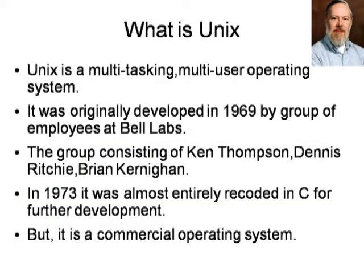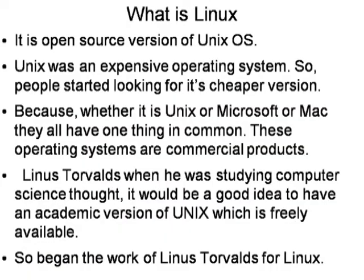Basically, Unix is a multi-tasking, multi-user operating system. As I told you, it was originally developed in 1969 by a group of employees at Bell Labs — Ken Thompson, Dennis Ritchie, Brian Kernigham — and it was recoded in C. But the limitation of Unix is that it is a commercial operating system. When we refer to Linux, it is a free operating system. What is the difference between a commercial and a free operating system? You need a serial key or a registration in order to run it.